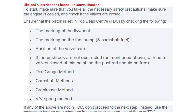We also have the dial gauge method. Here we remove the injector, insert a dial gauge, and then turn the engine. The pointer moves in one direction and stops, then starts moving in reverse — the moment it starts moving in reverse, that is TDC. So we remove the injector, insert the dial gauge, turn the engine, and as soon as the pointer starts moving in the reverse direction, the piston is at TDC.